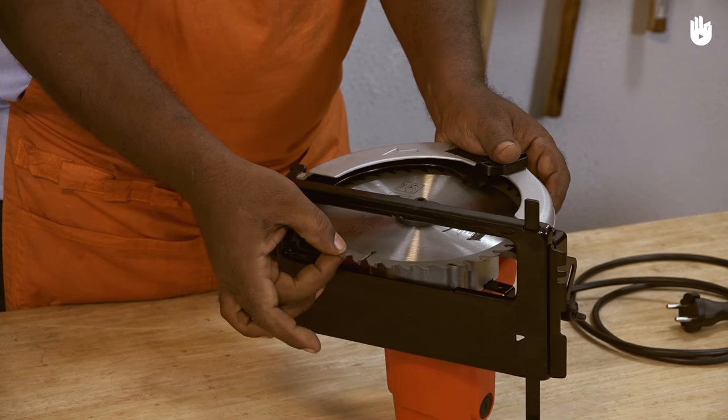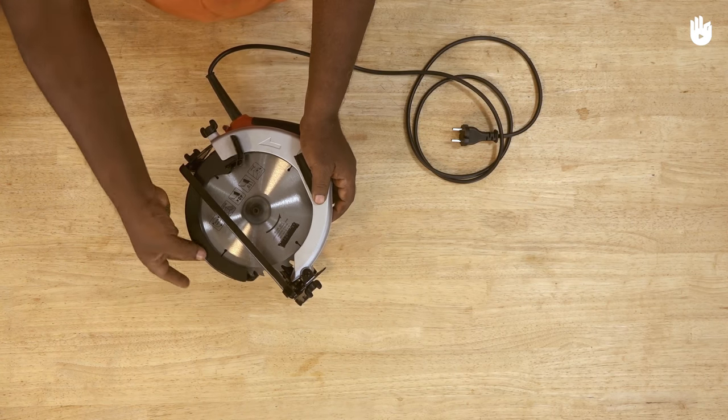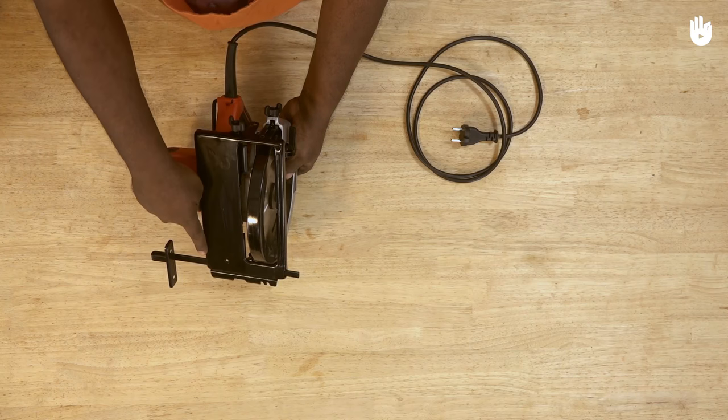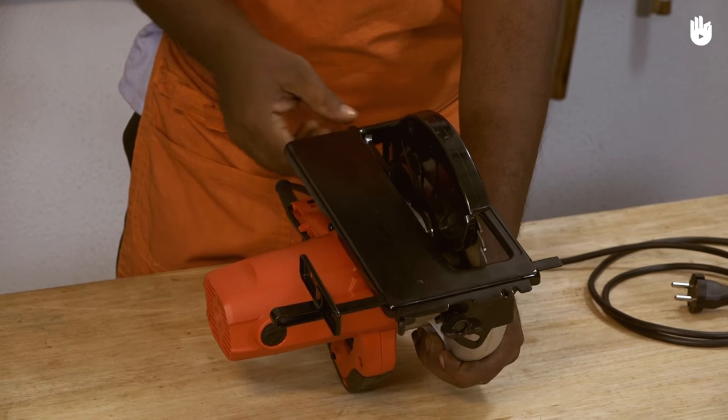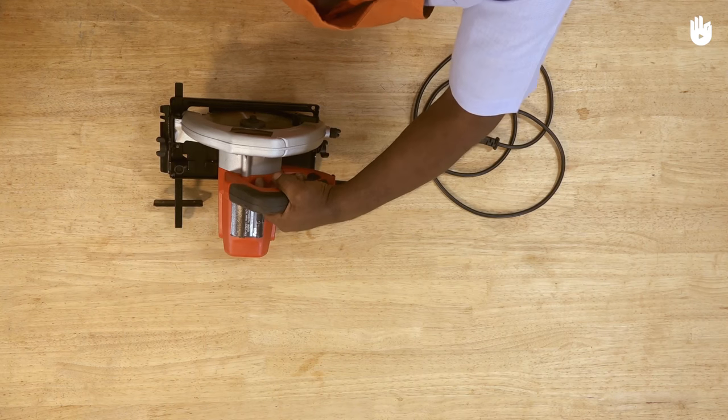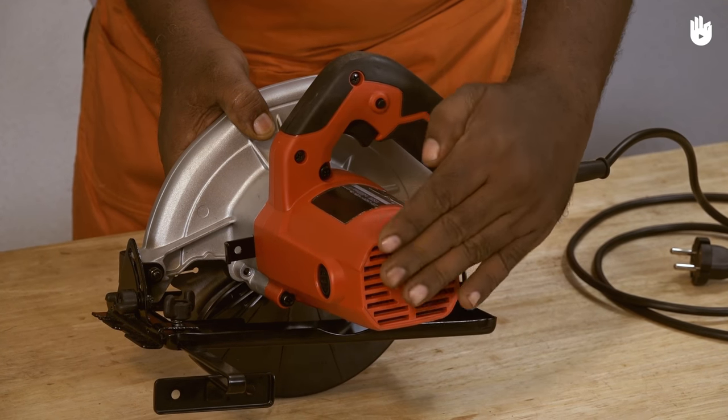The circular saw has a rotating blade that is shielded with a retractable blade guard, a sole plate to level the blade, a rip fence to guide the cut, a screw lock to set the angle of the sole plate, a handle that needs to be held firmly, a motor that turns the blade, and a power cord.